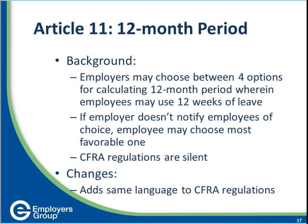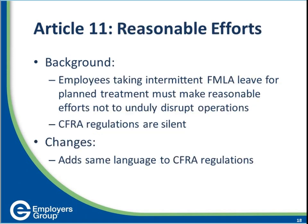If employees are family planning and you haven't clarified your calculation method in writing, you could theoretically be looking at employees going out in October, returning in December, leaving again in January, and going back out until March. That's an important consideration — if you don't have your calculation method documented in writing, get on top of it right away.